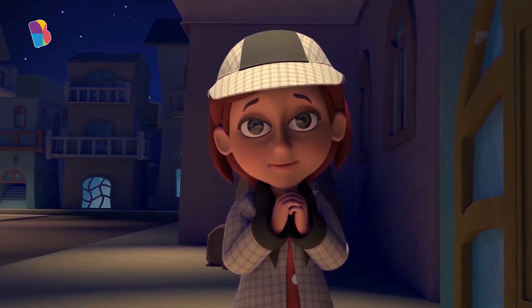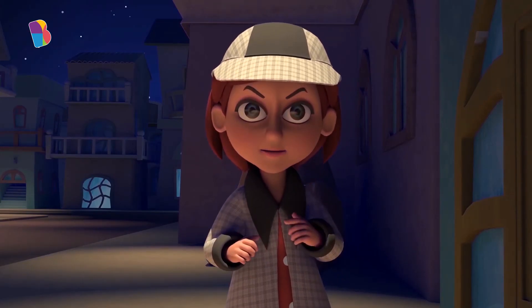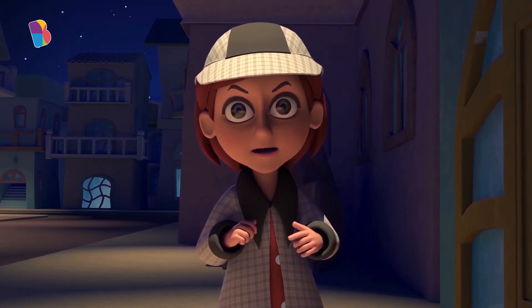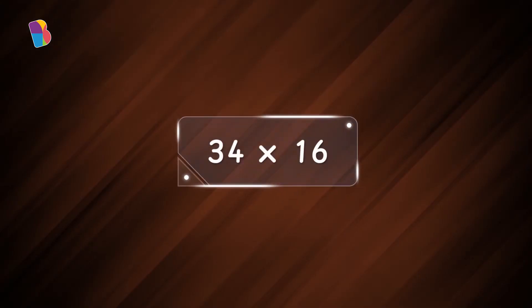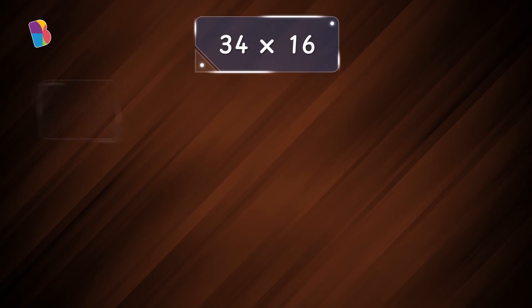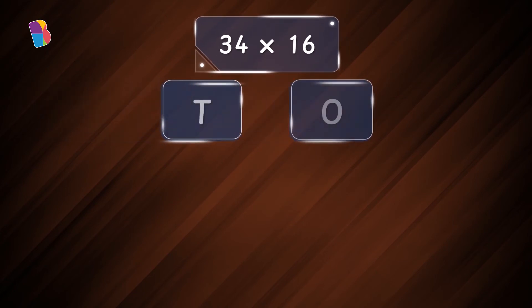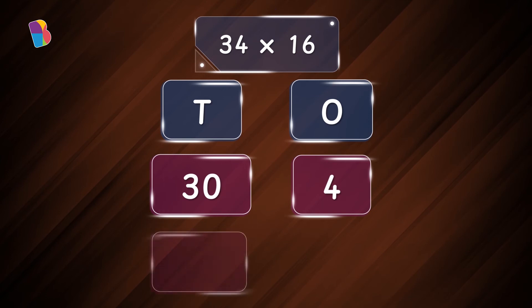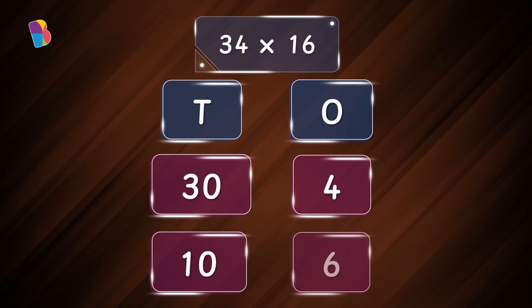The final clue! I know the toy thief is close. I must hurry up and finish this through multiplication. Thirty-four can be decomposed into tens and ones. Thirty-four can be written as three tens and four ones, while sixteen can be written as one ten and six ones.